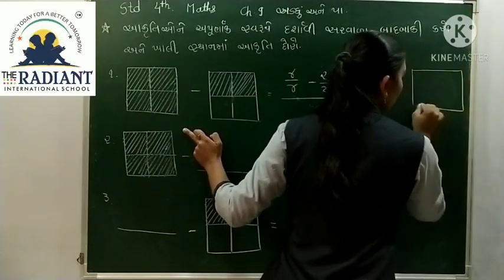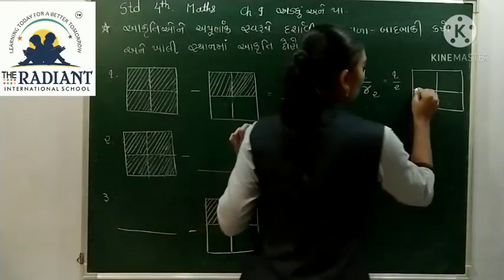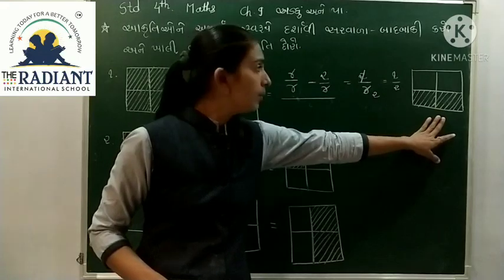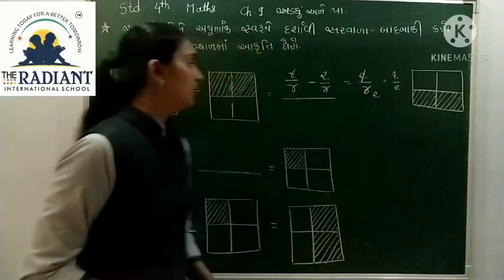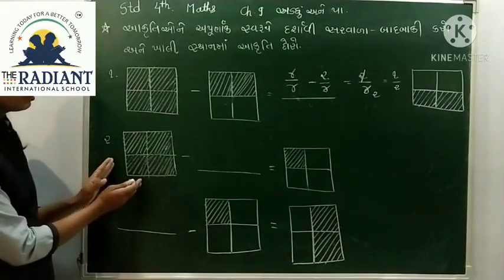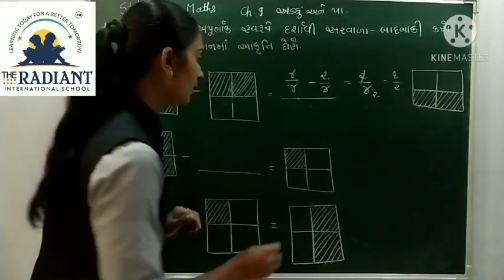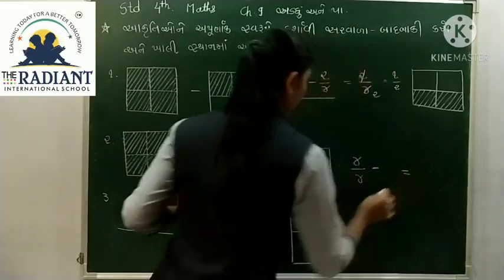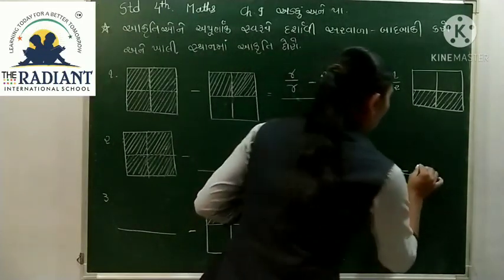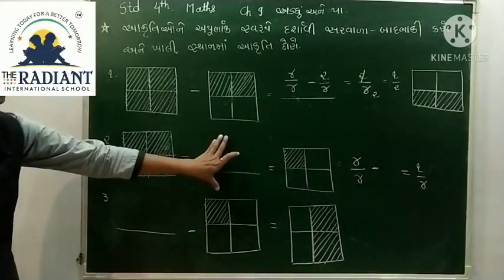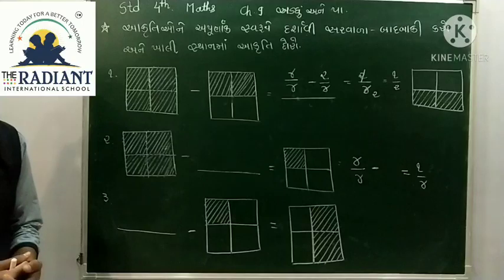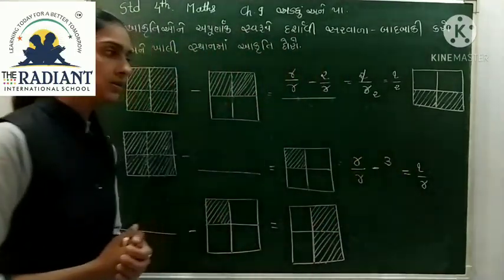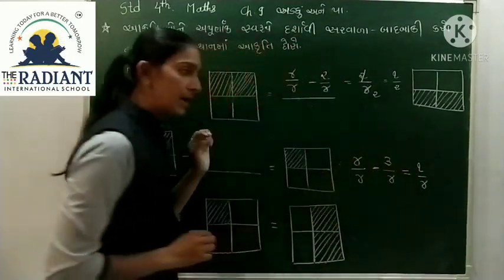આ રીતે આપણે આકૃતિ દોરીશું. બે ભાગમાં આપણે કળર કરીશું, એટલે અર્ધા ભાગની અંદર. અર્ધો ભાગ માઇનસ - જવાબ કેટલો? એક ભાગ કળર કરેલો છે, એટલે કે 1/4. જવાબ 1/4 આવ્યો. આ રીતે આકૃતિ દોરીએ તો જવાબ 1/4 (એક ચતુર્થાંશ) આવશે.